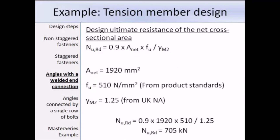Now that we have the net area, we can determine the ultimate tensile strength FU from the product standard. That works out as 510 N/mm², and the partial factor from the UK National Annex is 1.25. So just putting in those values, we get a design ultimate resistance of 705kN.